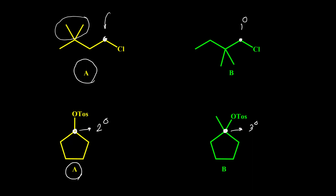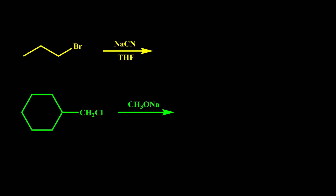Let's have some reaction examples in the second part of this video. Here are the first two examples — we would like to know the product for each reaction. Every time we need to evaluate if the reaction really is SN2. We have cyanide here and CH3O⁻ here. Both of them are strong nucleophiles, and our alkyl halides are primary. Primary substrate with a strong nucleophile is a classic SN2 reaction.